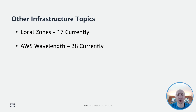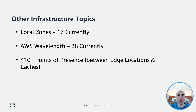Application traffic can reach application servers running in Wavelength Zones without leaving the mobile provider's network. This reduces extra network hops to the internet that can result in latencies of more than 100 milliseconds, preventing customers from taking full advantage of the bandwidth and latency advancements of 5G. Because of that, we have over 410 points of presence between edge locations and caches. And finally, we have AWS Outposts, which bring native AWS services, infrastructure, and operating models to virtually any data center, co-location space, or on-premise facility.